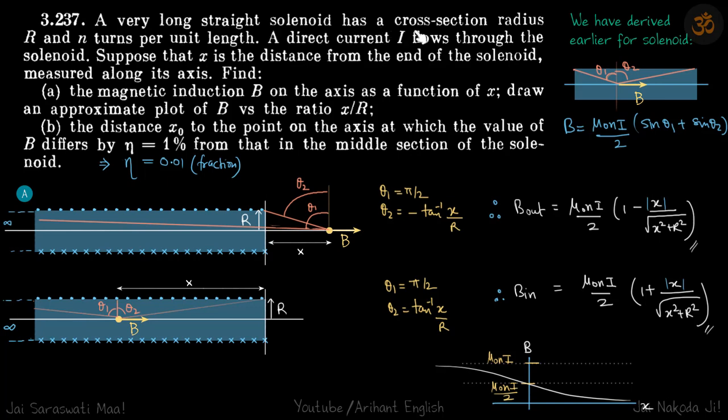A long solenoid is given with a cross-section radius r and n turns per meter. Current i is flowing and at a distance x from the end of the solenoid, we are supposed to find the magnetic field. He has not mentioned x towards which direction, we will calculate x in both directions.